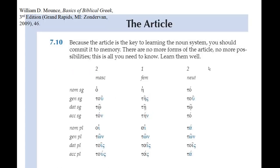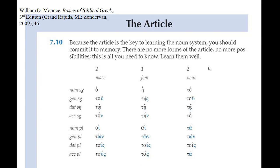The next thing to look at is the article. The article is extremely helpful — if you have one, a lot of your work is done for you. We're looking here at Mounce's Basics of Biblical Greek, third edition, page 46. The article is worth memorizing because it never changes. As Mounce says, there are no more forms of the article, no more possibilities. When you see an article, what you see is what you get — there are no special forms, no weird exceptions.